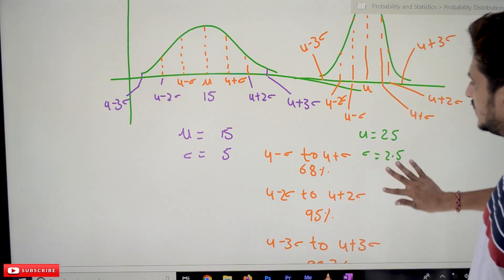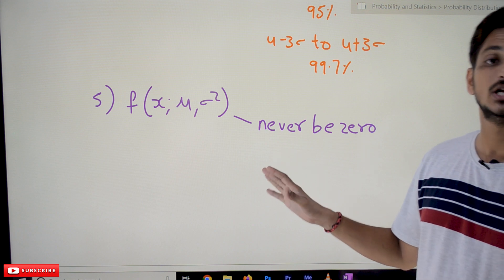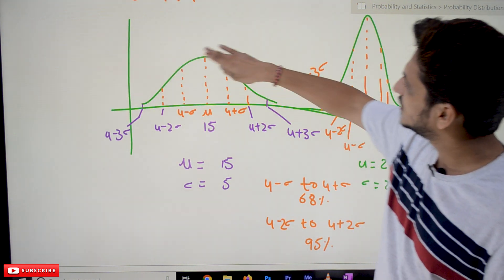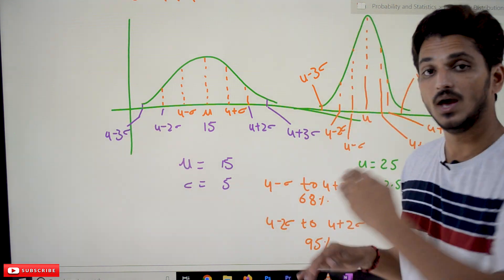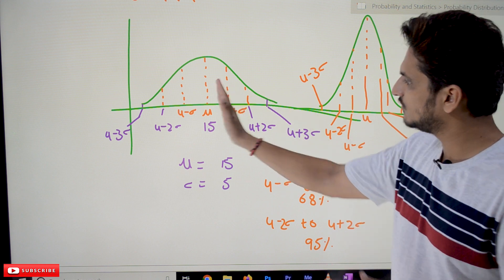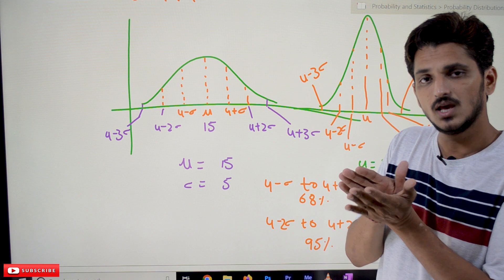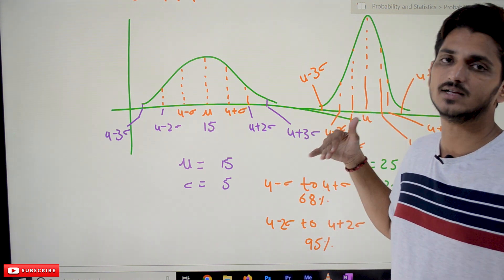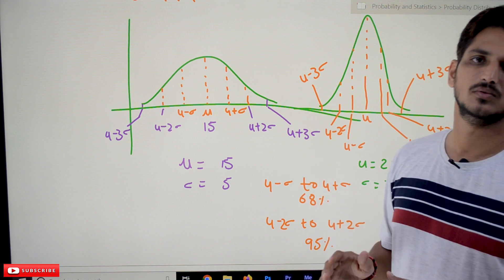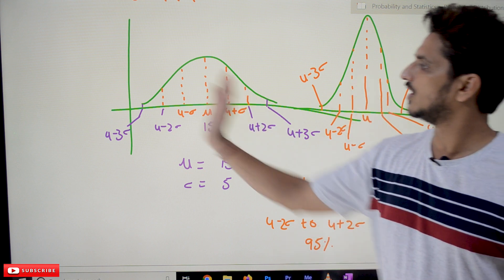The last property: for any x value substituted into f(x, μ, σ²), the function will never become zero. So normal distribution curves extend from minus infinity to plus infinity. As you move away from the mean, the curve comes very close to the x-axis but never touches it — touching would mean the value is zero, which never happens. Probabilities are always greater than zero, though they become very negligible as you move beyond three standard deviations from the mean, on both sides.